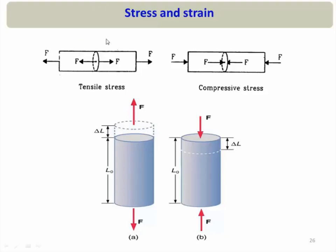Suppose we have a material and I am applying external forces in two opposite directions. If you take a cross-sectional area, you will find that the molecules in one half are experiencing a stretching force, and because of that those molecules will try to pull the molecules in the other half to restore them to their natural position. Similarly, molecules in the other half apply a force in the opposite direction. The molecules of the two halves will pull each other, and this is called tensile stress.